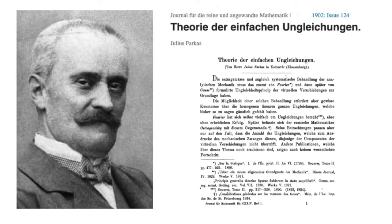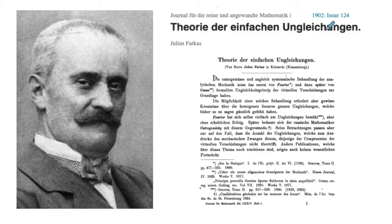This video is dedicated to the classical Farkas lemma, which predates the major developments in optimization in general and in linear programming in particular. The lemma was established by the Hungarian mathematician Julius Farkas back in 1902, and it had to do with the solvability of systems of linear inequalities. The simplex method, for example, was developed in the 1940s, long after the Farkas lemma. The duality theory was developed around the same time, and Farkas lemma played a very important role in the developments in linear programming and in optimization in general.